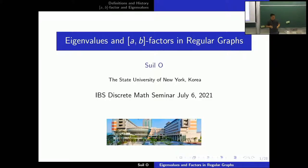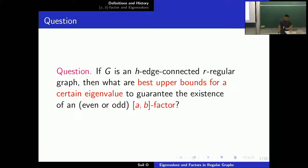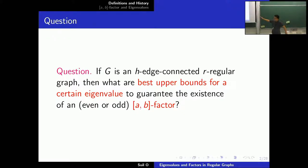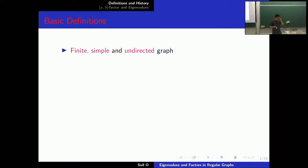So in this talk, I'm going to talk about the relationship between eigenvalues and A-B factors in regular graphs. Particularly, I'm going to answer the following question: what are the best upper bounds for a certain eigenvalue in an H edge-connected R-regular graph to guarantee the existence of an odd or an even A-B factor? Some of you may not be familiar with some of the terms in this question, so let me briefly explain the basic definitions.